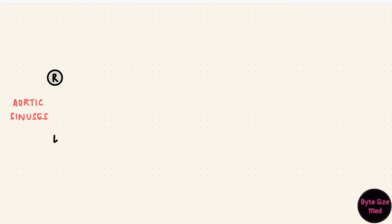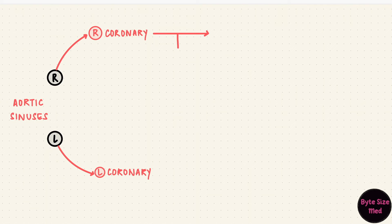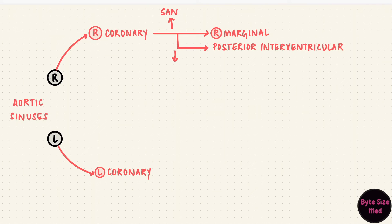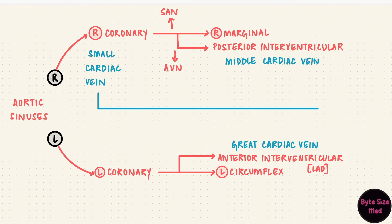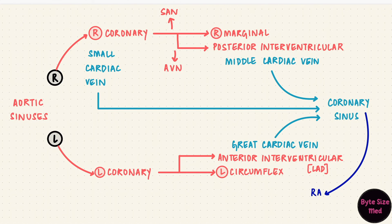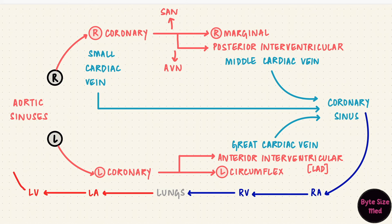To schematize the important points: the right and left aortic sinuses give rise to the right and left coronary arteries. The right coronary artery forms the right marginal artery and the posterior interventricular artery, and gives branches to the sinoatrial and atrioventricular nodes. The left coronary artery gives off a circumflex branch and the anterior interventricular artery. The great cardiac vein accompanies the anterior interventricular artery, the middle cardiac vein accompanies the posterior interventricular artery, and the small cardiac vein accompanies the right coronary artery — all draining into the coronary sinus, which opens into the right atrium. Deoxygenated blood then goes to the lungs, returns oxygenated to the left heart, and is pumped out through the aorta, filling the aortic sinuses and back through the coronary arteries. That is coronary circulation.